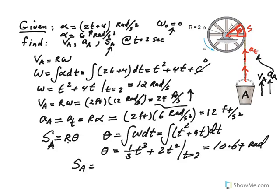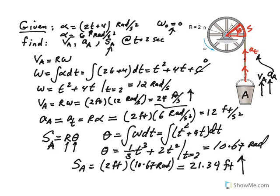Therefore, s sub A becomes r times theta. R is 2 feet and theta is 10.67 radians, which comes out to be 21.34 feet. So this guy in 2 seconds will move up from its initial position 21.34 feet. As always, thank you for watching and listening. I'll come up shortly with another video. Thanks a lot and see you soon.